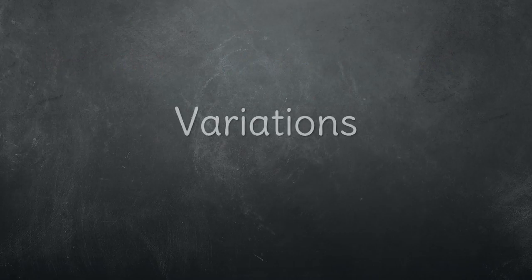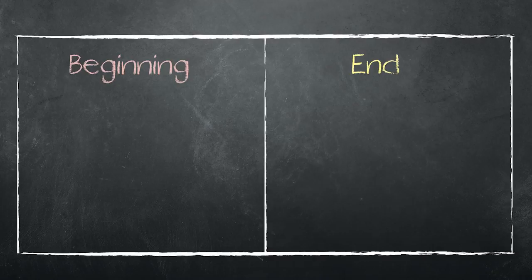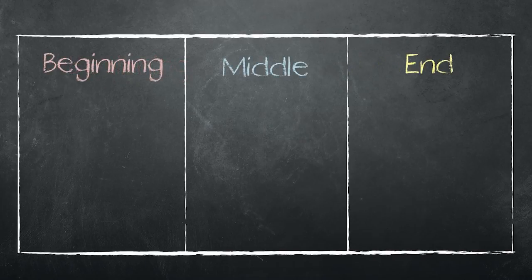There are a few variations to this strategy that can be helpful, especially with very young students. The first variation is to start with a simpler two-box chart that just focuses on the beginning and end. These concepts are easier for young children to think about at first. Later, you can introduce the idea of the middle and use the full chart.